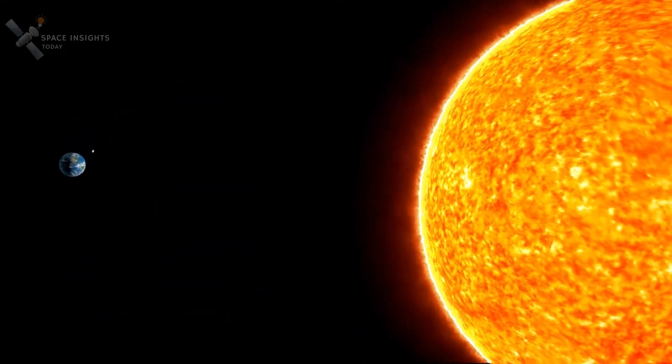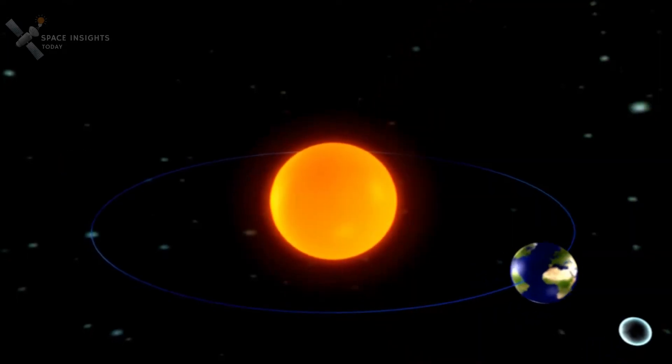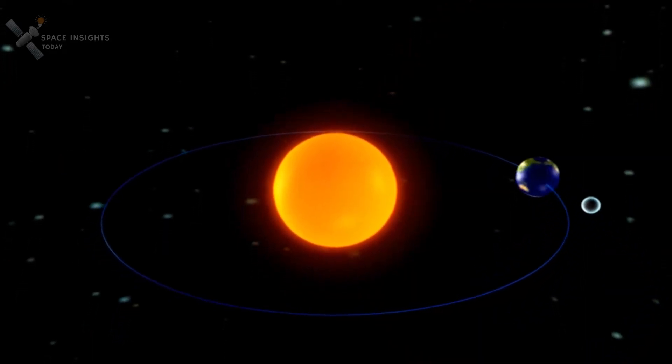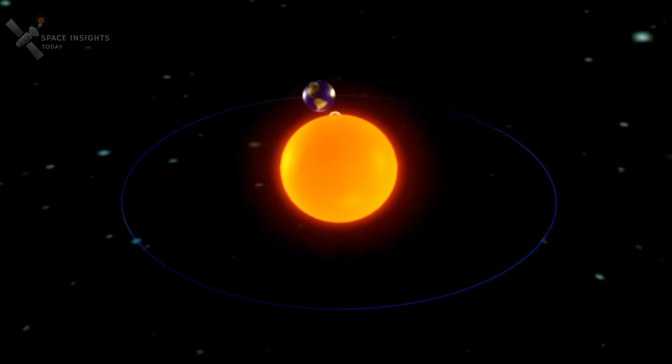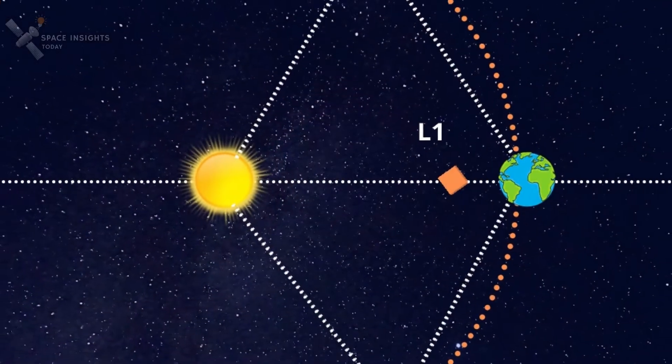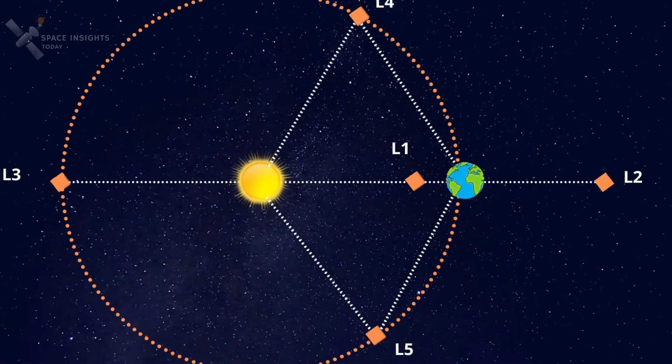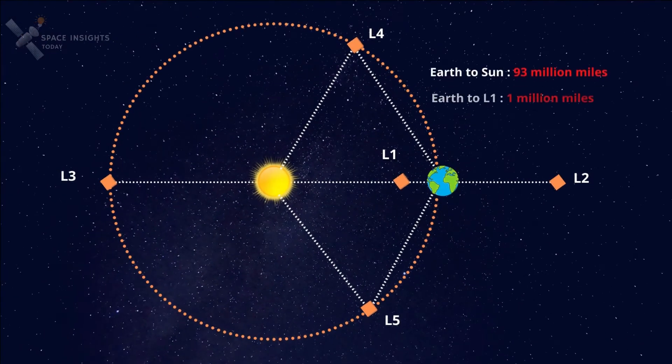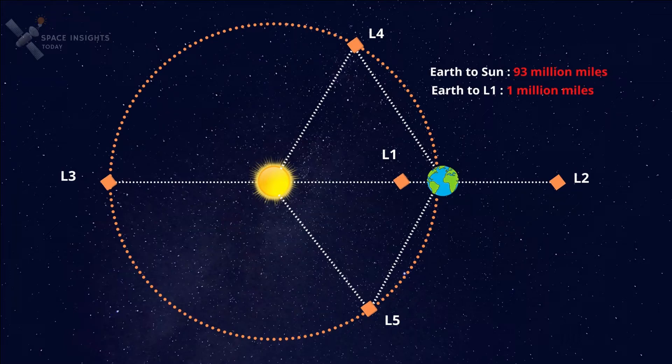In Sun-Earth system, Sun is at the center, and the Earth revolves around it. Because the Sun is so massive, it has far greater gravitational pull than Earth. The L1 point for the Sun-Earth system is just one million miles from the Earth, and distance from Earth to Sun is roughly 93 million miles.